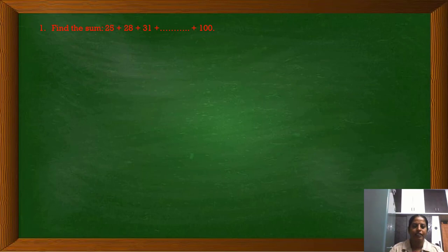Here is the first problem: find the sum 25 plus 28 plus 31 and so on up to 100. We know that this is an arithmetic progression, and if we want to find the sum of all the terms of the arithmetic progression, then it is known as an arithmetic series.